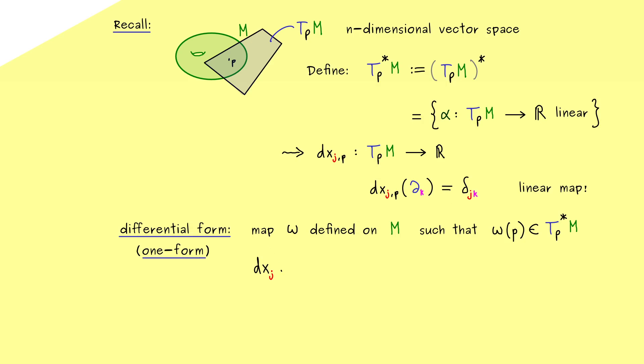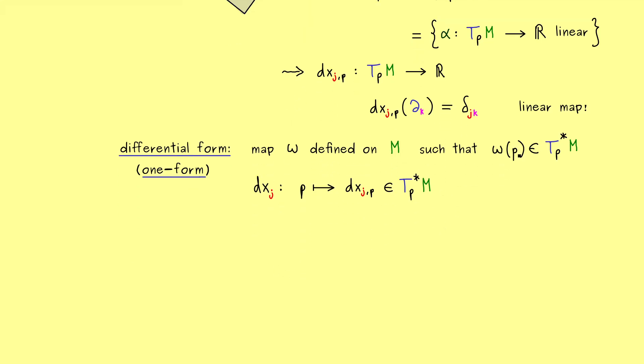You have to see it as a map defined on the manifold. Each point p is sent to the linear map from before, which is an element of T_p* M. So now you know what a one-form is. It's just a map that gives for each point on M a linear map. Now in order to define two-forms or generally k-forms, we need to do some multilinear algebra.